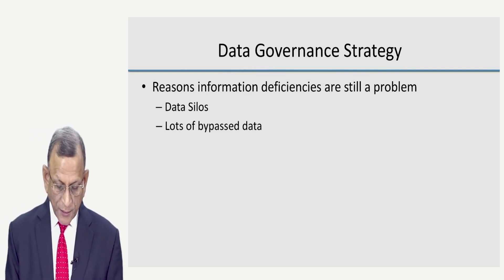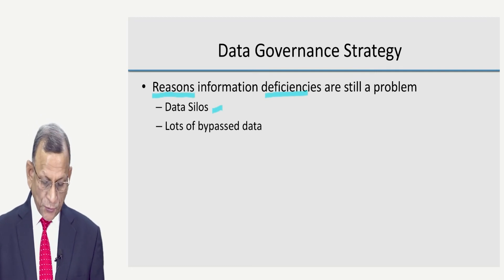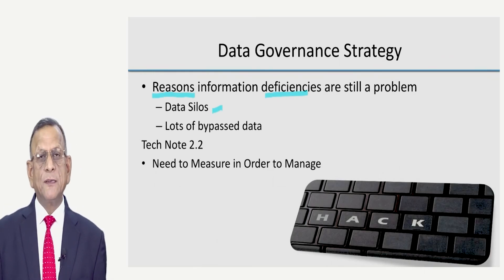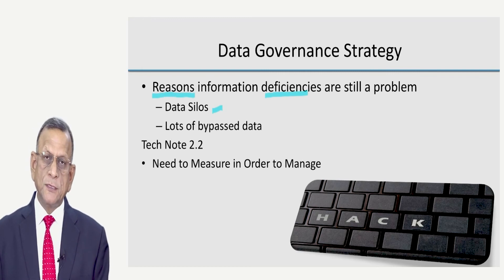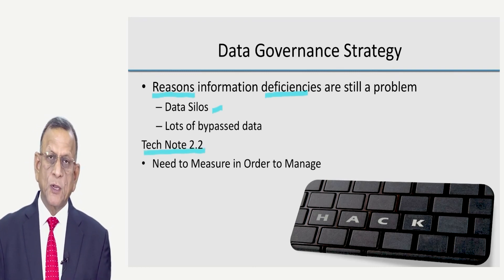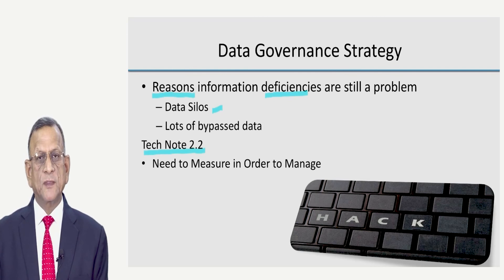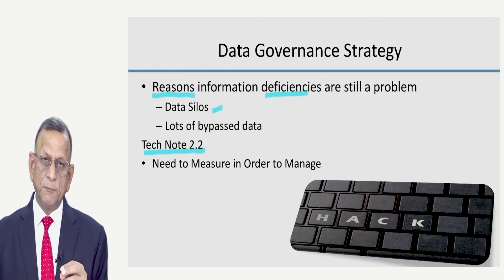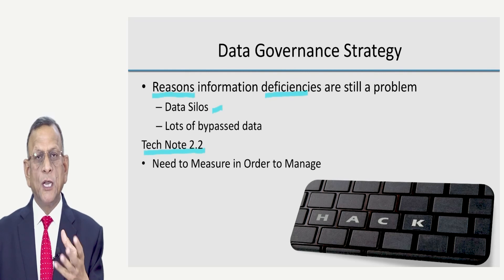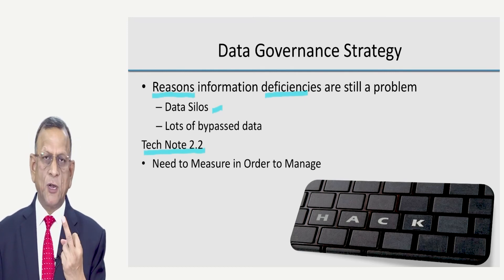Why is information deficiency happening? What are the reasons? We have understood data silos. The second reason is lots of bypassed data. Bypass data means we are not in a position to use data for a particular purpose or process. The example in Tech Note 2.2 is of a construction company building two types of flats — economy and luxury — where raw material is procured and used for both.